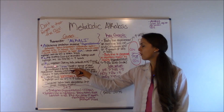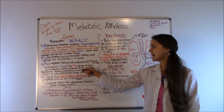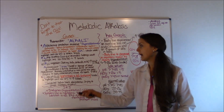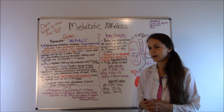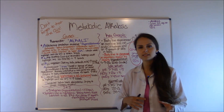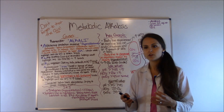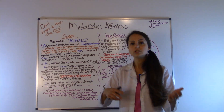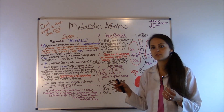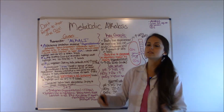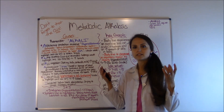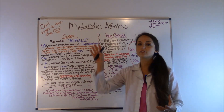Citrate is also used in continuous renal replacement therapy — an alternative to hemodialysis that is gentler for hemodynamically unstable patients. The body metabolizes citrate as bicarb, so all that citrate entering through blood transfusion or renal replacement therapy dramatically increases bicarb levels, causing metabolic alkalosis.